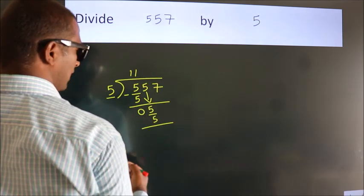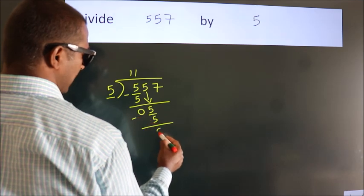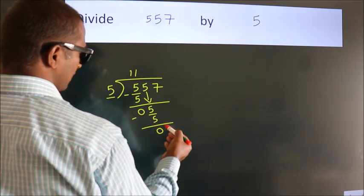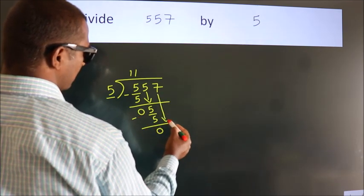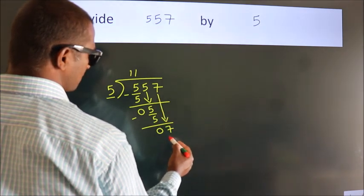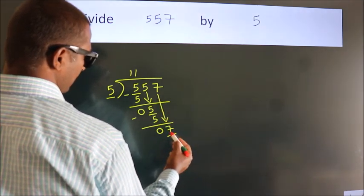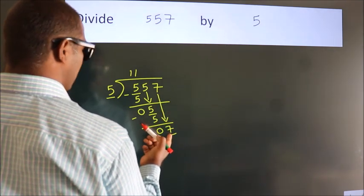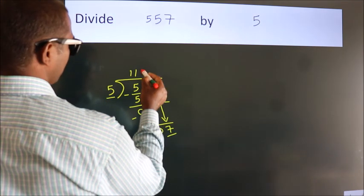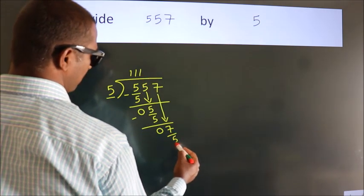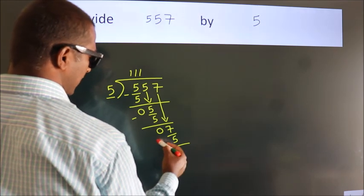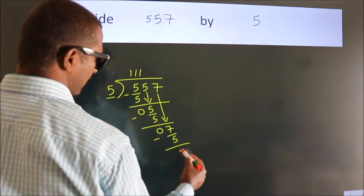Now we subtract and get zero. After this, bring down the beside number, so seven comes down. The number closest to seven in the five times table is five once five. Now we subtract and get remainder two.